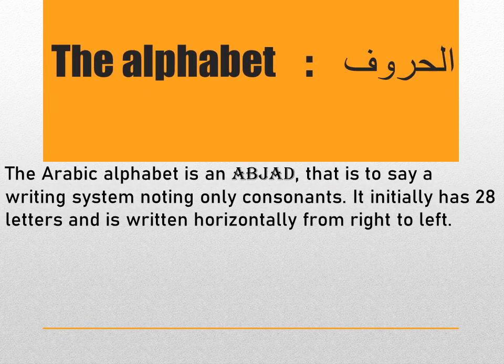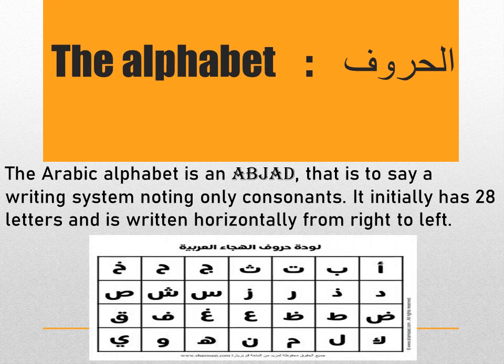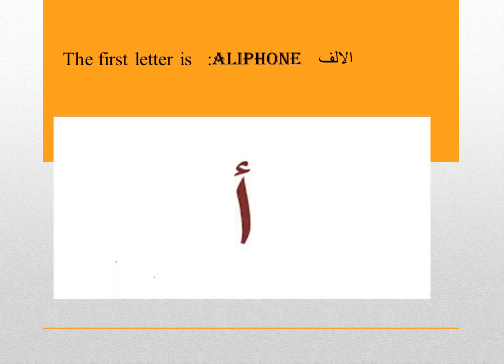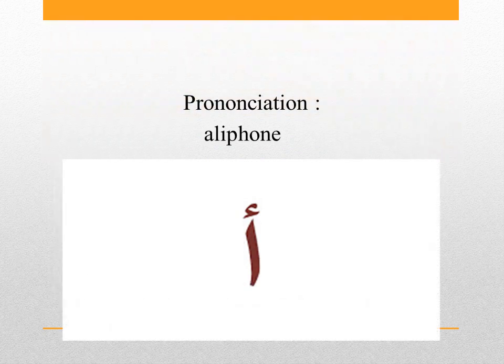Hi everyone! In today's video we are going to talk about the Arabic alphabet, what we call in Arabic 'al huruf.' The Arabic alphabet is an abjad — a writing system noting only consonants. It initially has 28 letters and is written horizontally from right to left. Now we are going to learn how to pronounce the first letter.